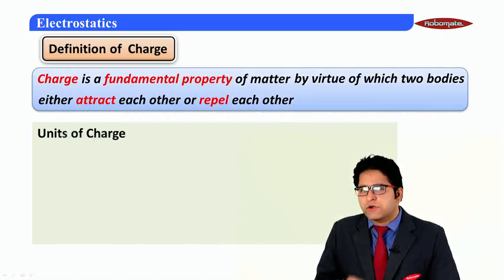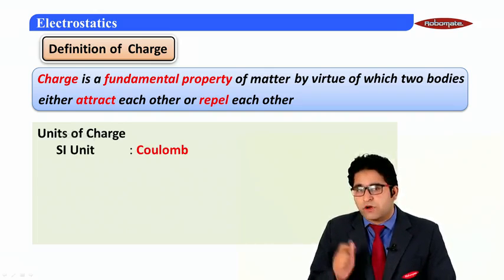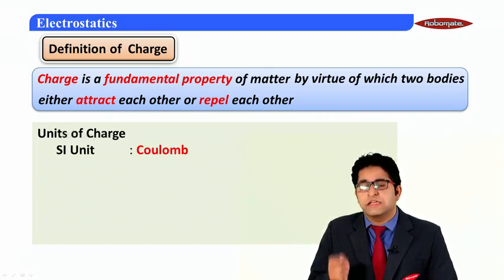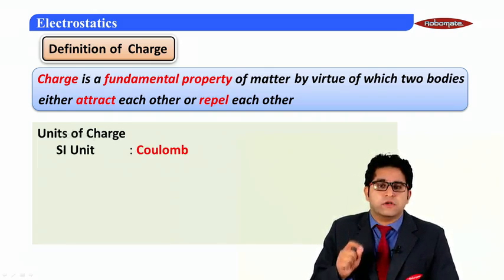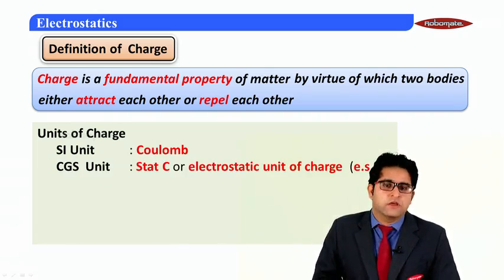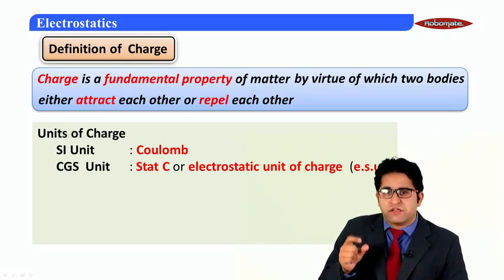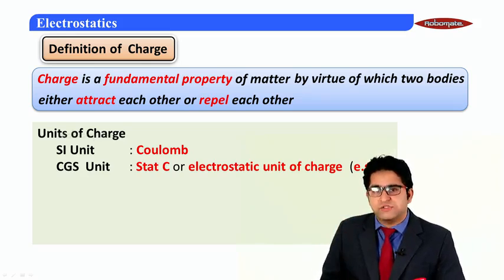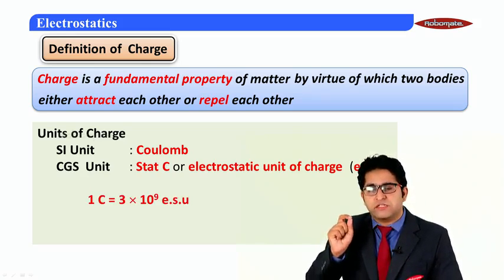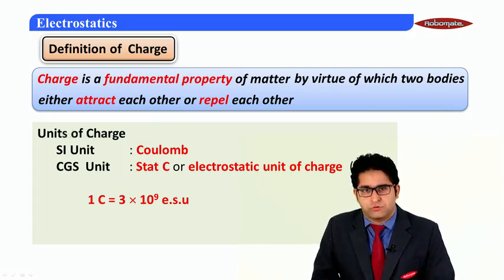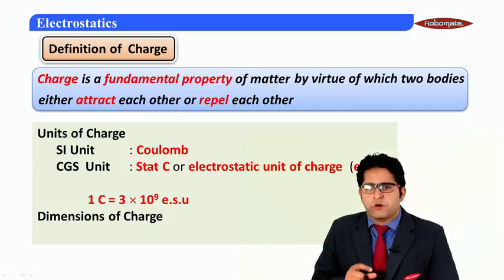The SI unit of charge is coulomb. The CGS unit of charge is stat coulomb, or electrostatic unit of charge, also written as ESU. The relation between one coulomb and ESU is: one coulomb is equal to 3 × 10⁹ ESU.